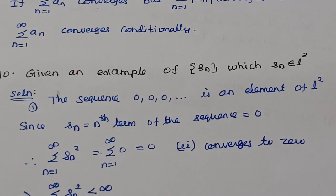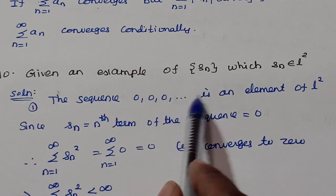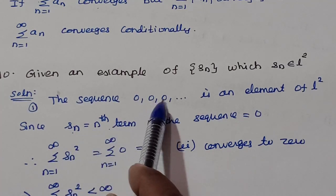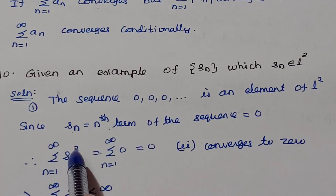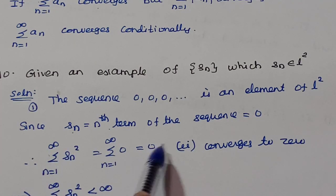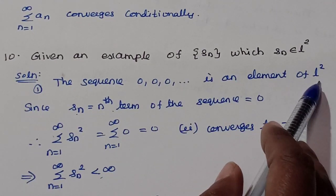Give an example of a sequence in L². The sequence (0, 0, 0, …) is an element of L². Its nth term is 0, so Σ Sₙ² = Σ 0 = 0, which converges. Since it is less than ∞, this series is an element of L².